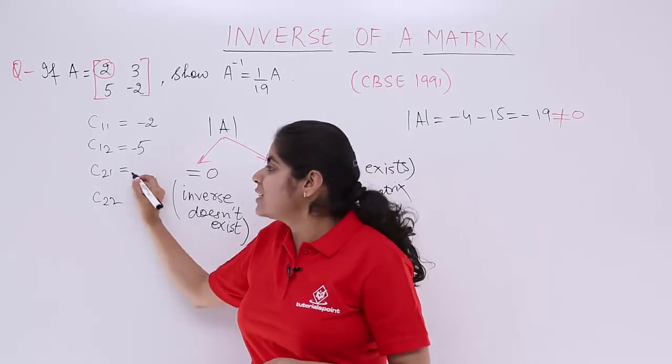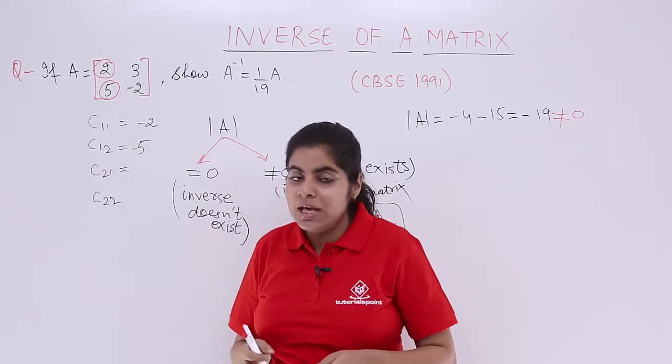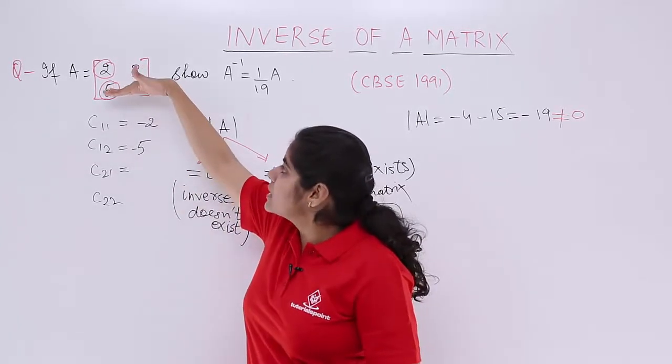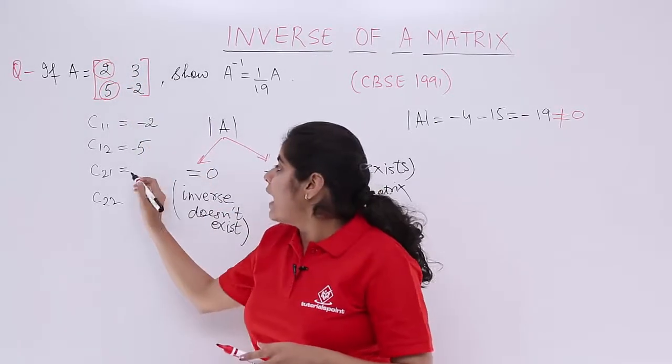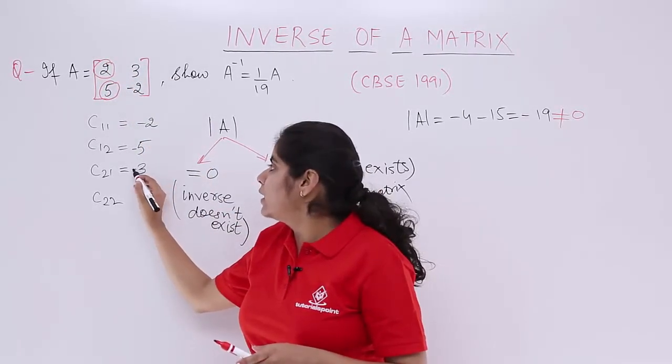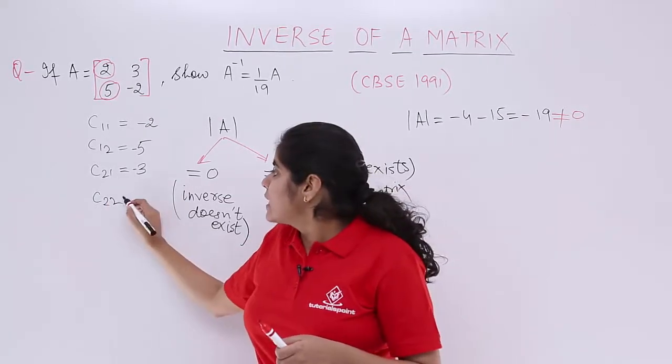Next, move on to C21, which means second row, first column element. Ignore the second row, ignore the first column. You have 3 and that 3 will again be negative because 2 plus 1 is 3 which is an odd number.